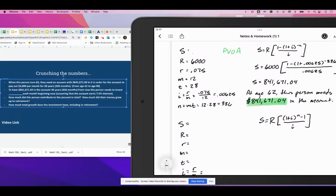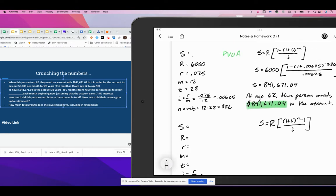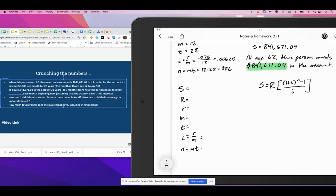So we have figured out the amount that this person needs to have in the account in order to withdraw $6,000 a month in retirement. And that's the present value of ordinary annuity. Next, our next step is going to be to figure out what they need to do to make that happen.